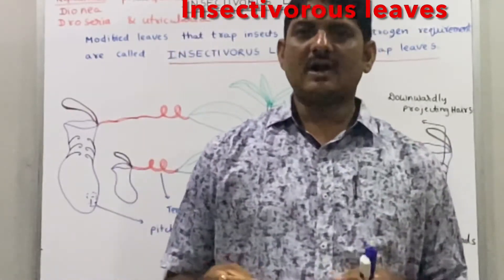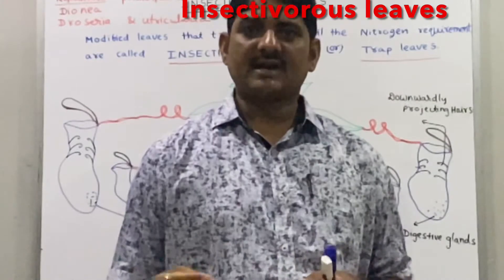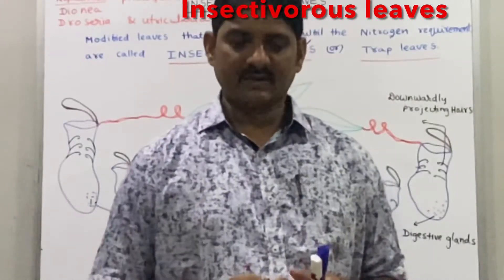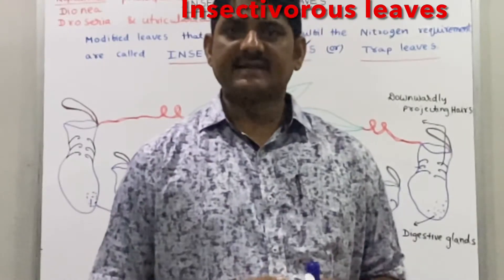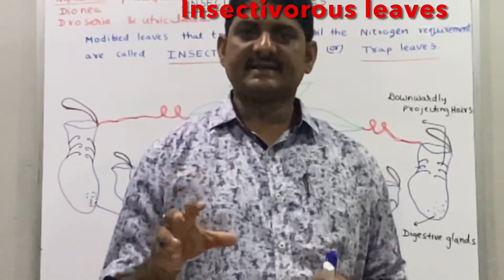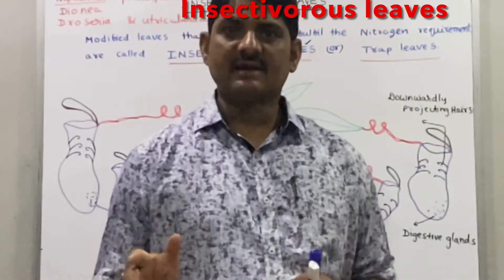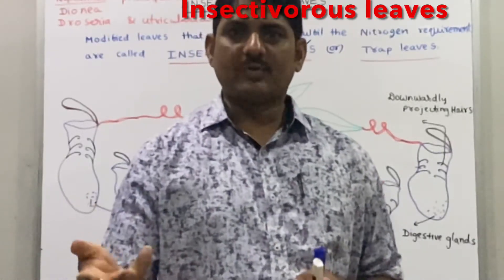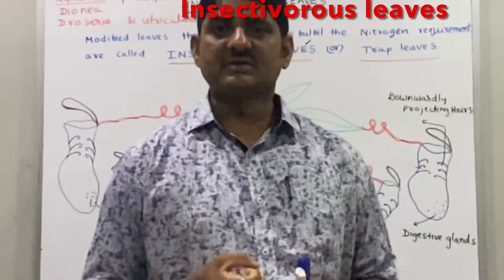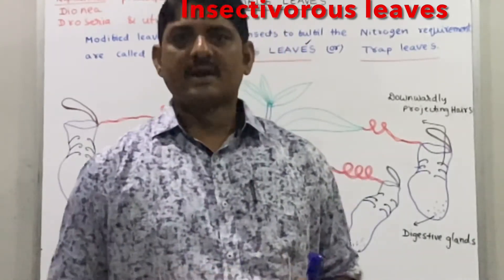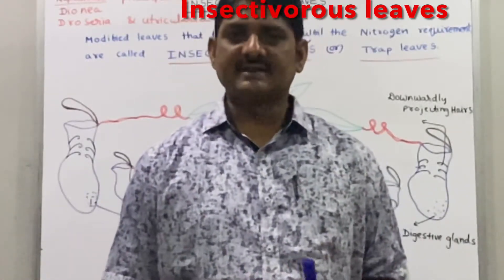A common question is: if insectivorous plants grow in nitrogen-deficient soils, why don't other plants also grow there? The answer is that these plants lack nitrogen in the soil, so they attract, trap, and kill insects. The protein found in insects contains nitrogen, which the plant absorbs. These are called insectivorous or carnivorous plants.